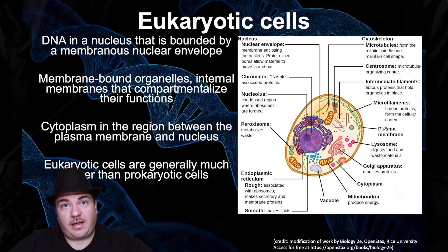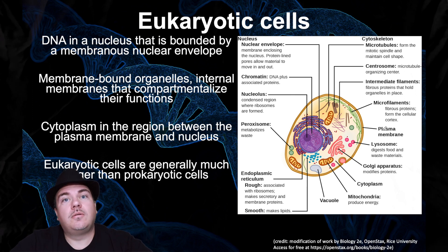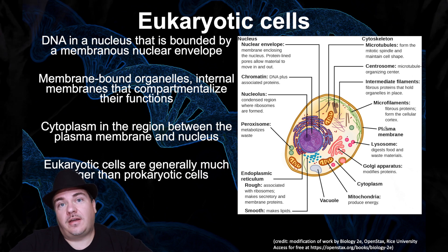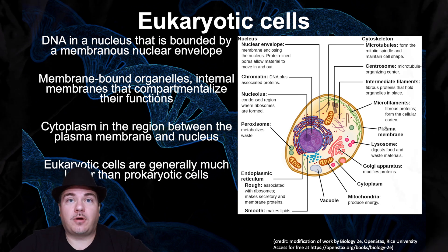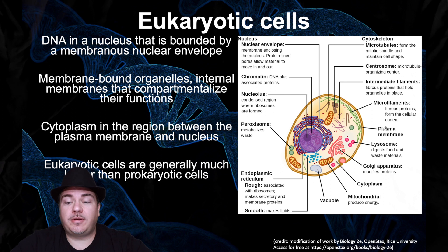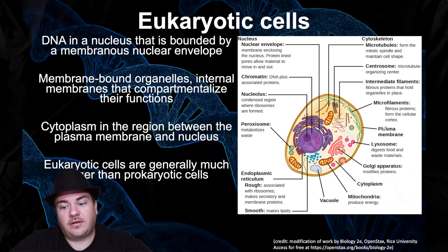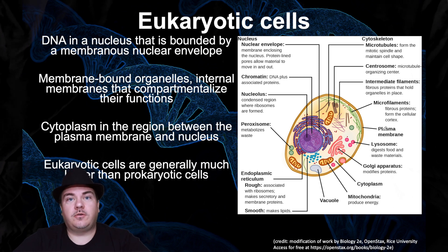In general, eukaryotic cells do have membrane-bound organelles, while prokaryotic cells do not. Eukaryotic cells also have cytoplasm, the fluid inside the cell, and ribosomes to build proteins. Eukaryotic cells are also usually a lot bigger than prokaryotic cells. That's a rough description of eukaryotic cells, and we'll learn more details throughout this series of video lectures.